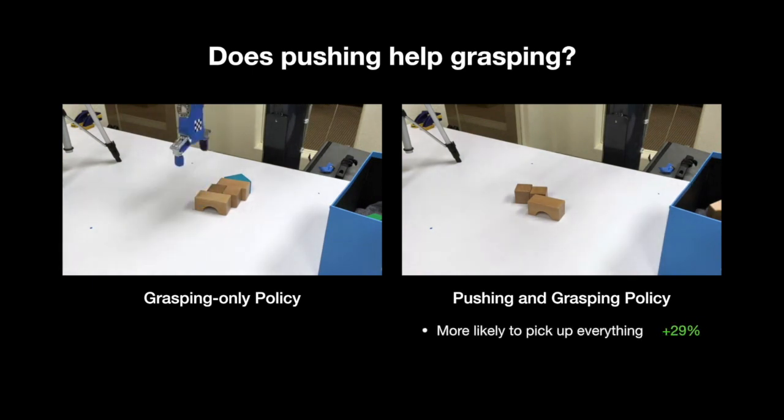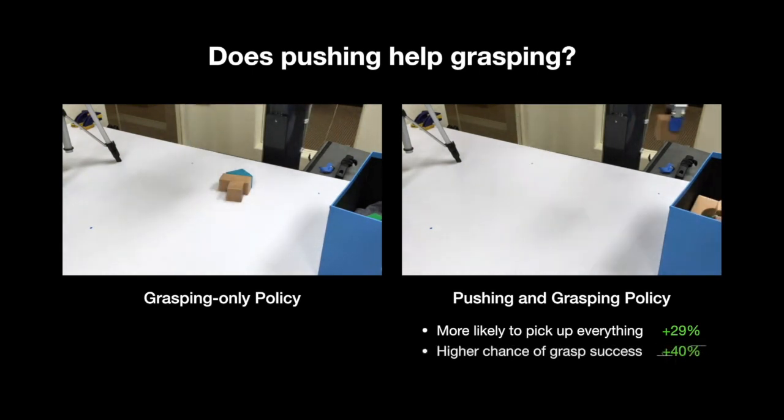In general, we find that the policies with both pushing and grasping are more likely to pick up everything, whereas the grasping-only policies can frequently get stuck repeating bad grasps. Pushing and grasping policies also experience a much higher chance of overall grasping success, and pick up objects more frequently, often taking less time to pick up the same number of objects.